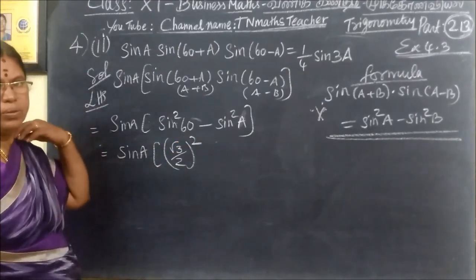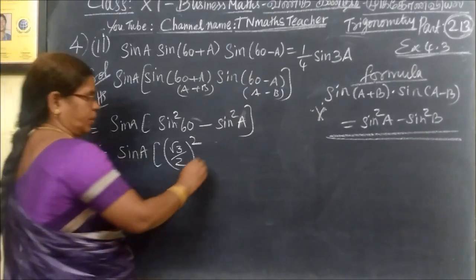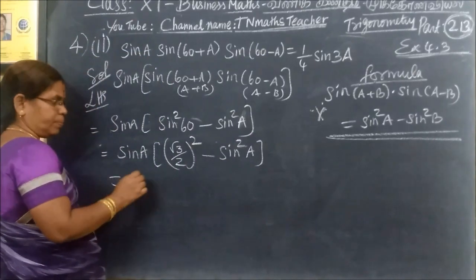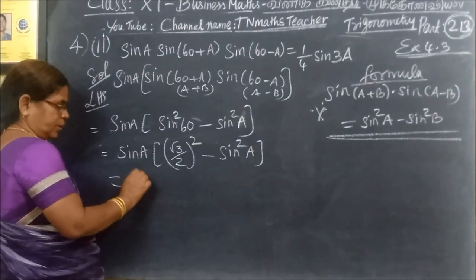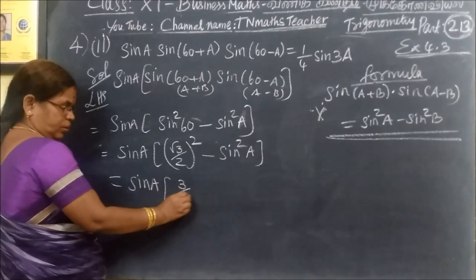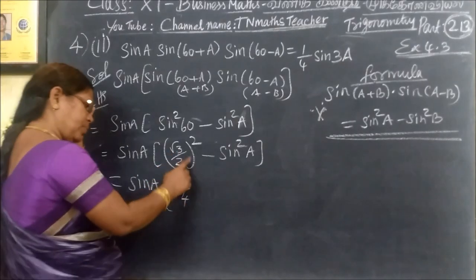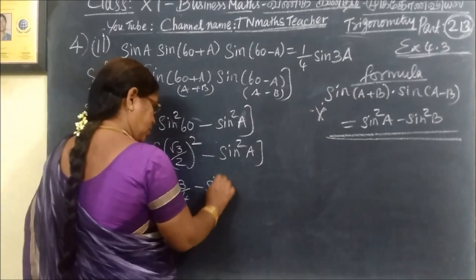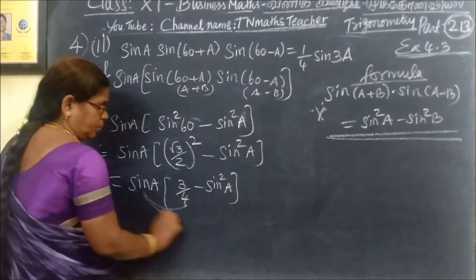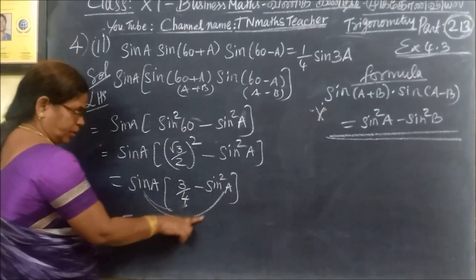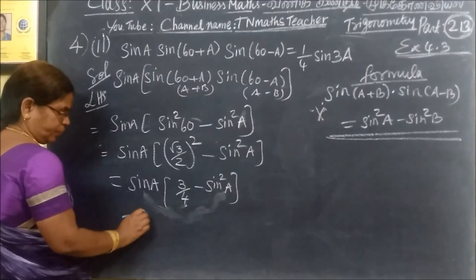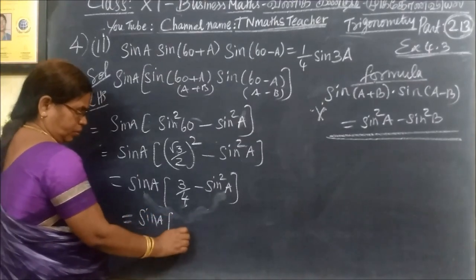So we have Sin²A minus Sin²A. Sin(60) equals root 3 over 2, so Sin²(60) equals 3 over 4. We get Sin²A minus Sin²A, which gives minus Sin²A. Now we will do the same formula — before that, we will do a little step. This is Sin A, taking LHS.